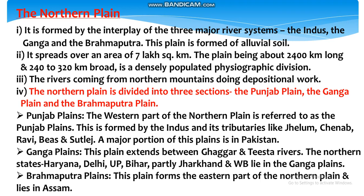Next is the Ganga plain, which extends between the Ghaggar and Tista rivers. The northern states of Haryana, Delhi, Uttar Pradesh, Bihar, partly Jharkhand and West Bengal lie in this plain. Yah maidān Ghaggar aur Tistā nadī ke bīc hai; utarī rājya Haryāṇā, Dillī, Uttar Pradesh, Bihār, Jhārkhaṇḍ ke kuch bhāg tathā Paścim Baṃgāl is maidān meṃ sthit haiṃ. The Brahmaputra plain forms the eastern part of the northern plain and lies in Assam.